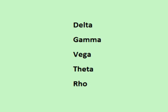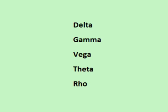There are 5 main option Greeks: delta, gamma, vega, theta, and rho, plus a bunch of others that are lesser known.